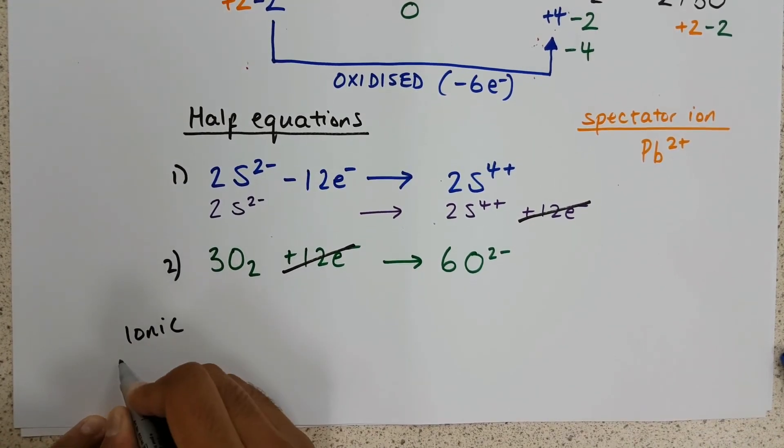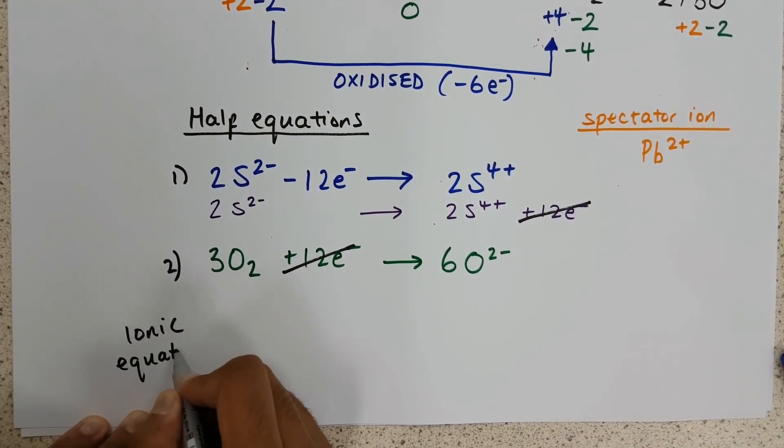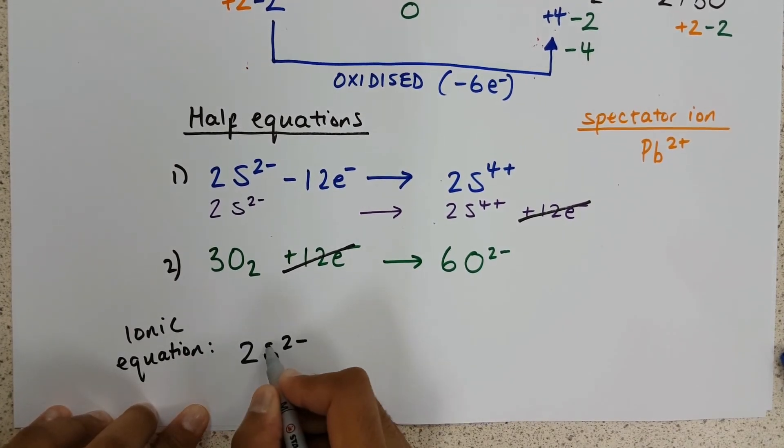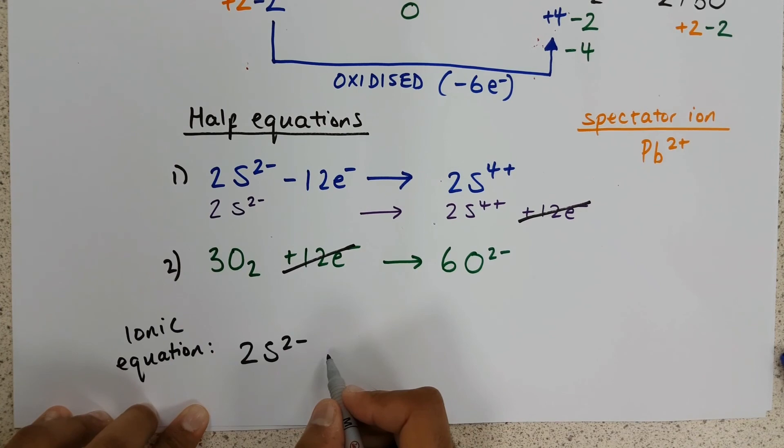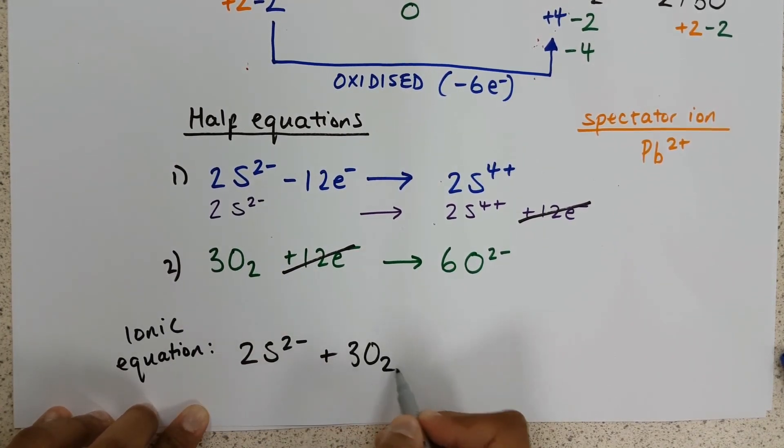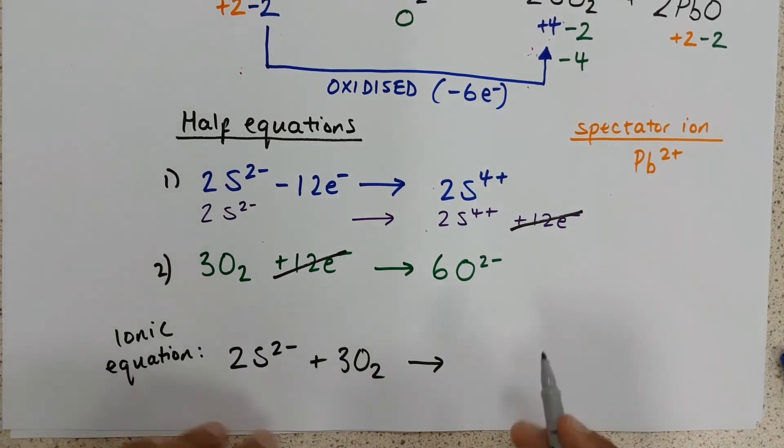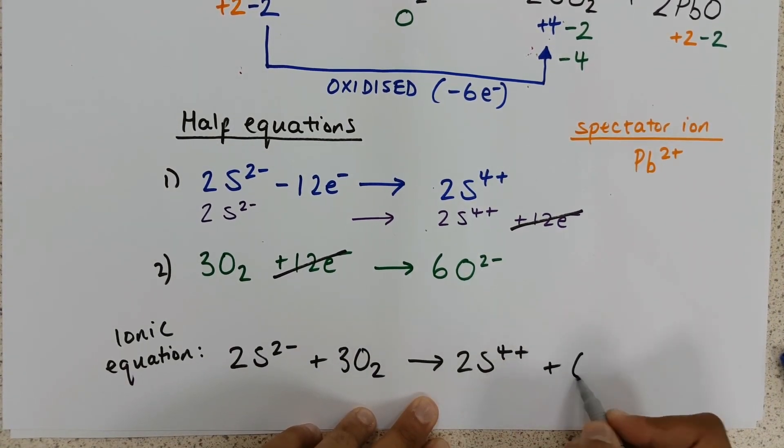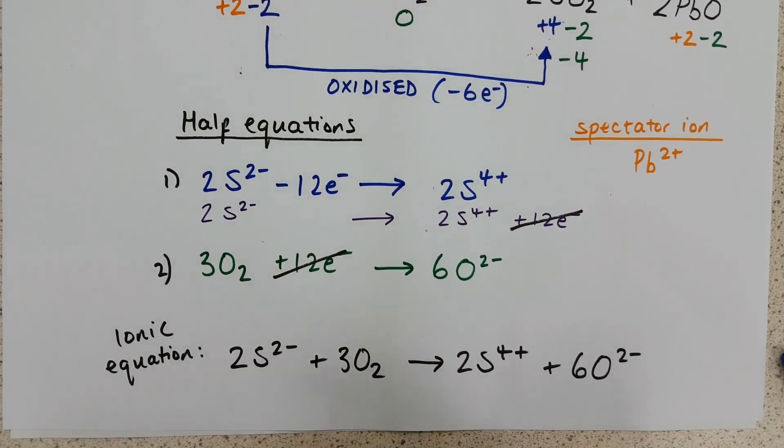Our overall ionic equation will form two S2 minus, plus three oxygen. We've removed our electrons, and then two S4 plus, plus six O2 minus. And that is our complete ionic equation.